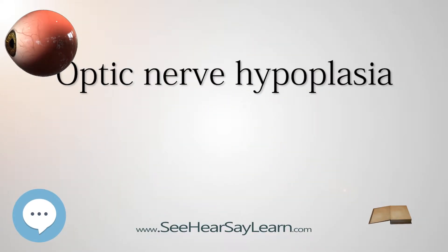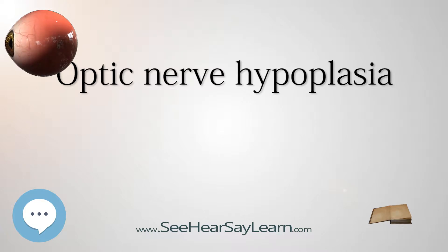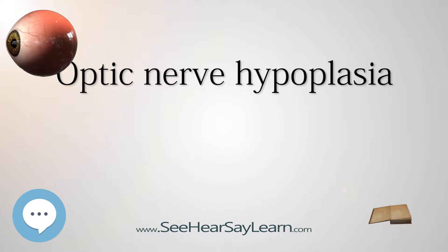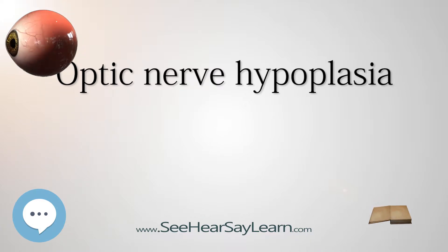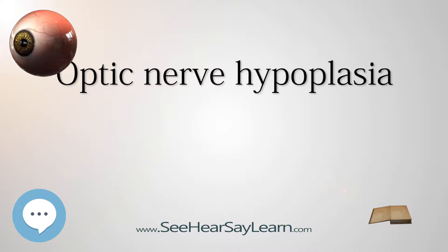Optic nerve hypoplasia is a medical condition arising from the underdevelopment of the optic nerve. This condition is the most common congenital optic nerve anomaly. The optic disc appears abnormally small because not all the optic nerve axons have developed properly. It is often associated with endocrinopathies, hormone deficiencies, developmental delay, and brain malformations. The optic nerve, responsible for transmitting visual signals from the retina to the brain, has approximately 1.2 million nerve fibers in the average person. In those diagnosed with ONH, however, there are noticeably fewer nerves.